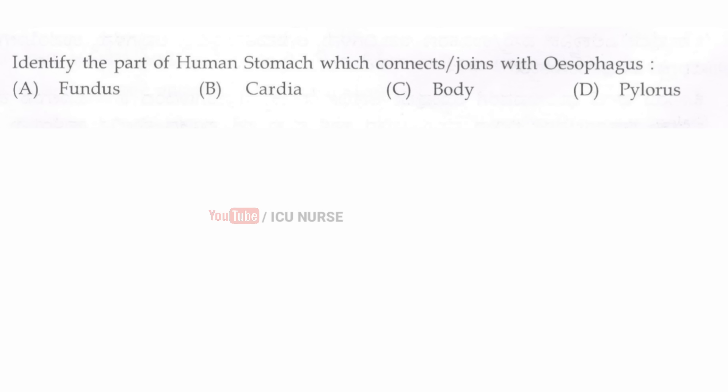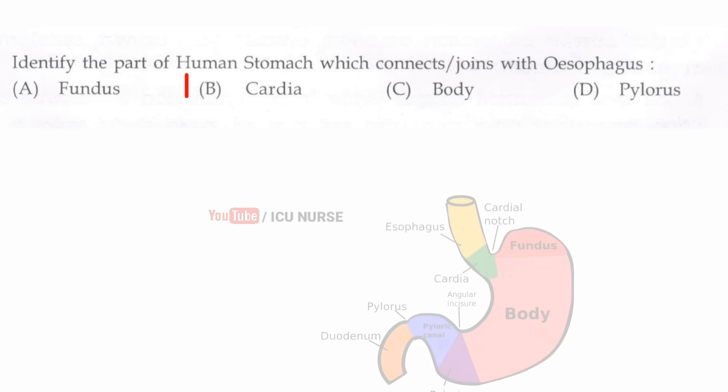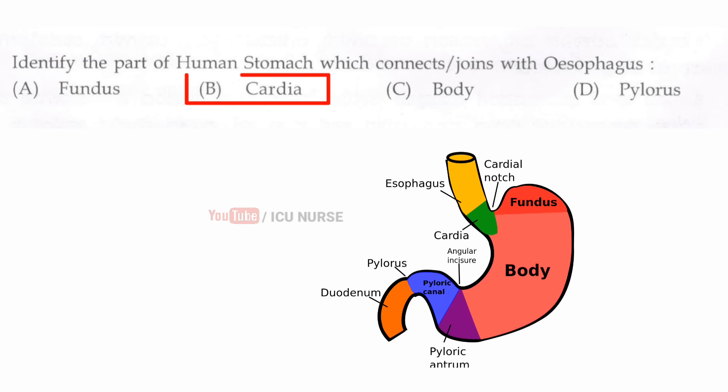Identify the part of the human stomach which connects or joins with the esophagus. The correct answer is B, cardia. Cardia is the part of the human stomach which joins or connects with the esophagus.